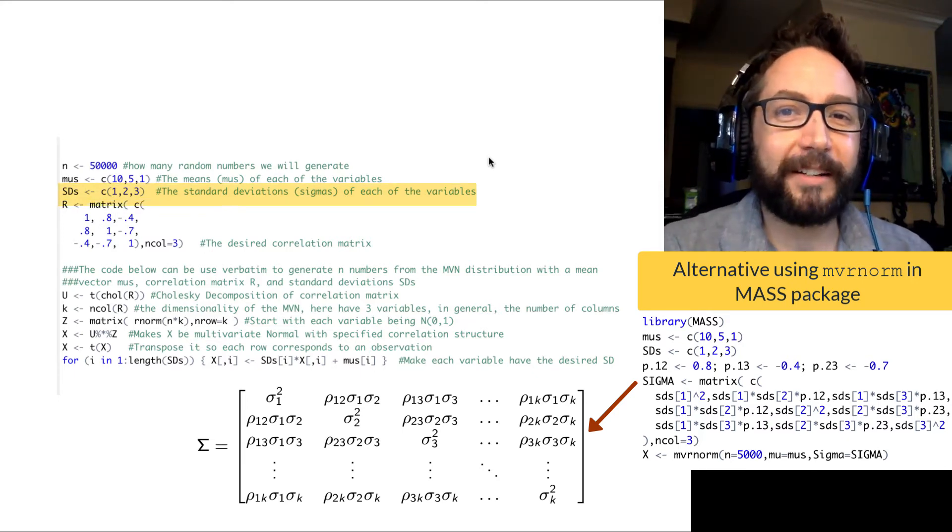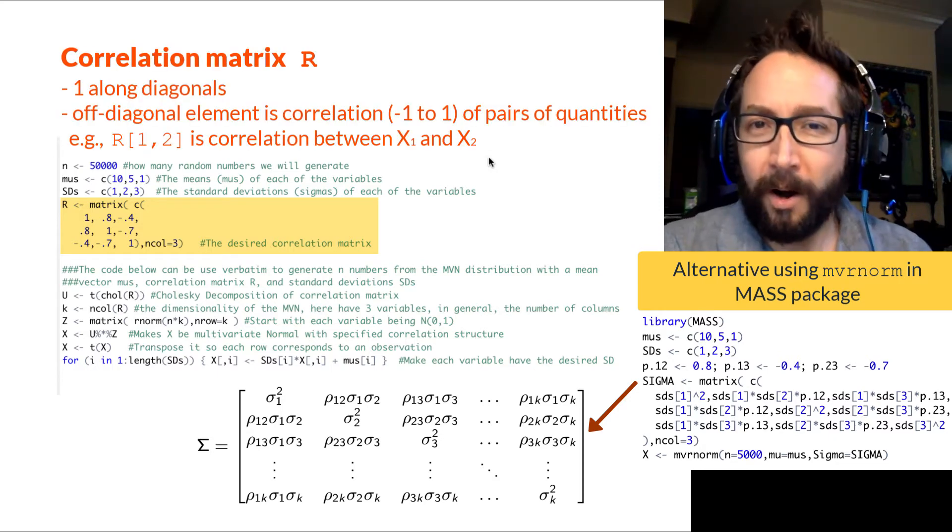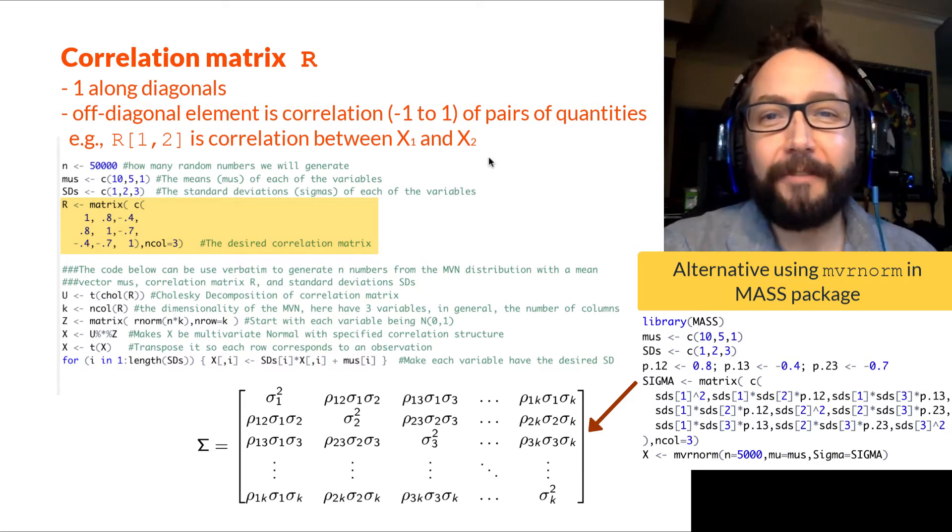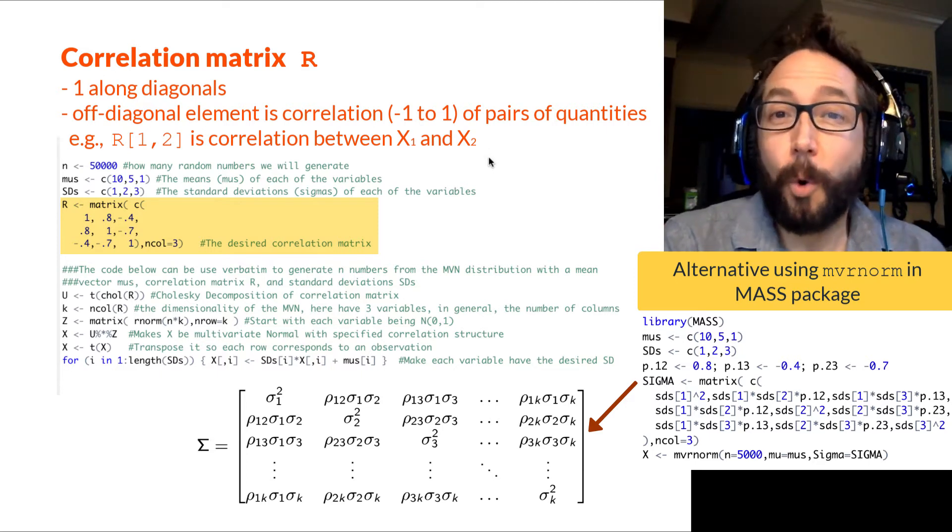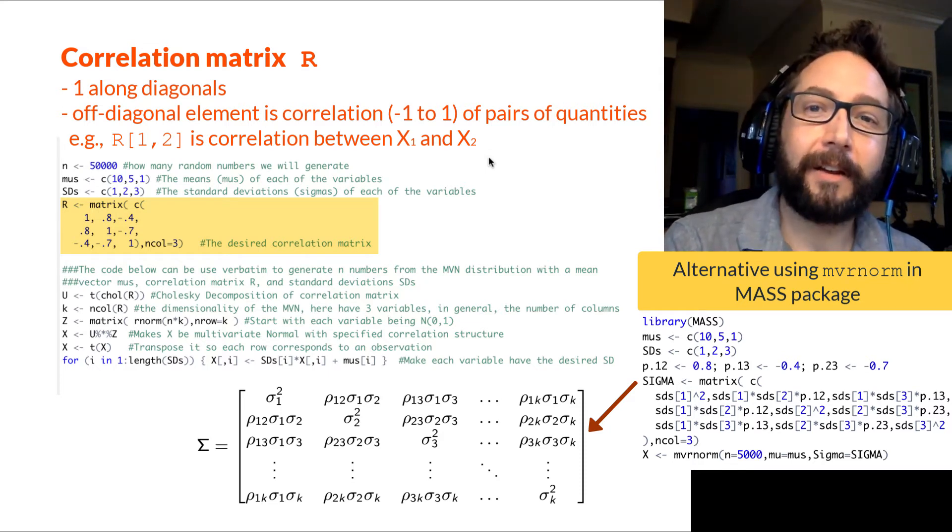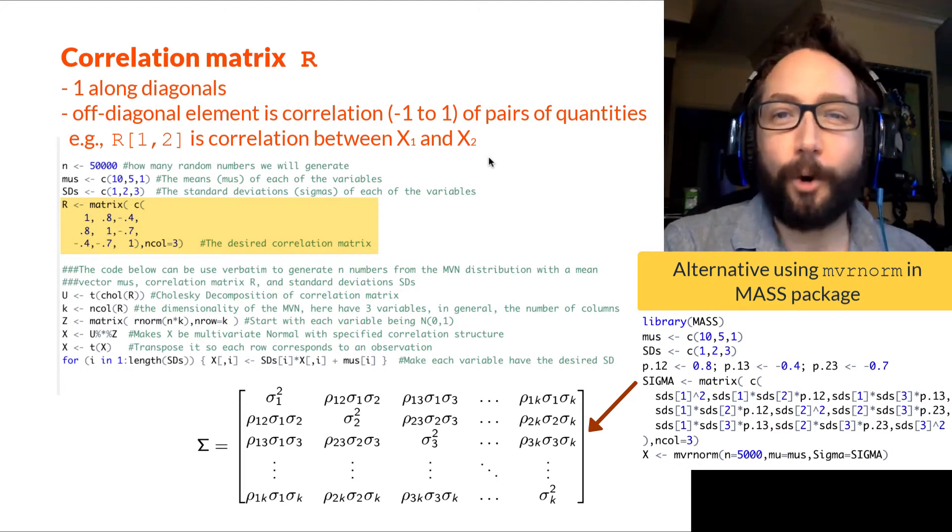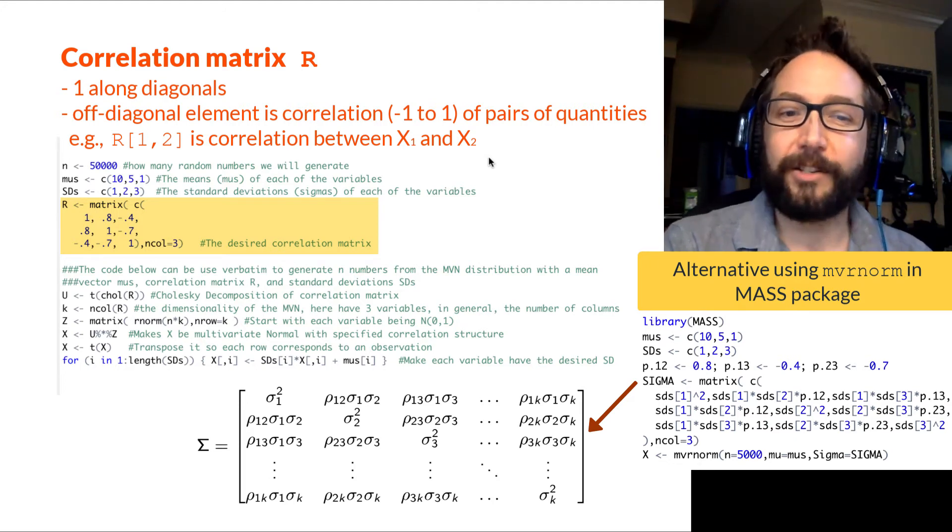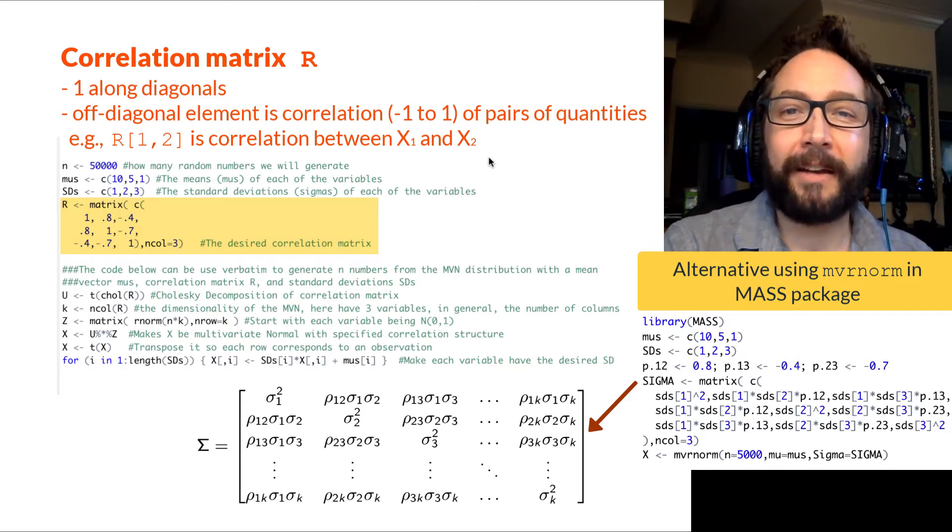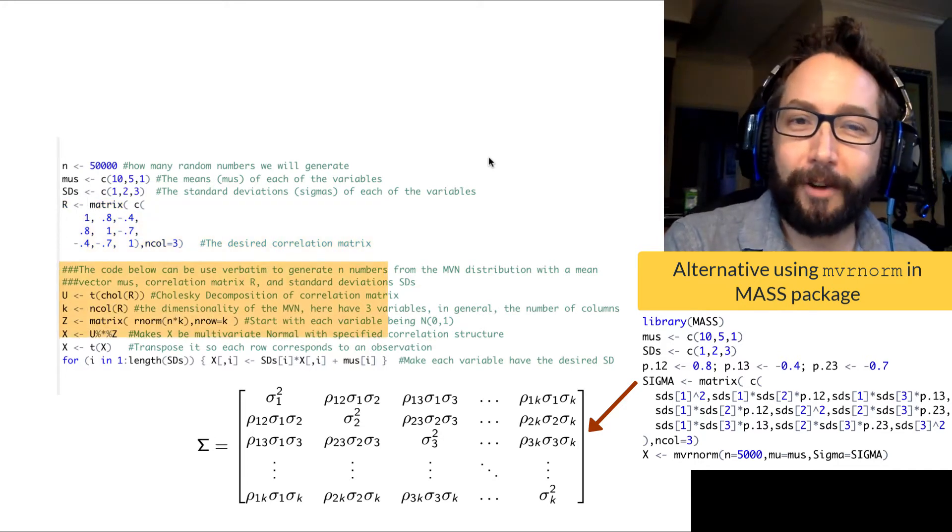And then what I'm going to do is I'm going to define a covariance matrix. But I'm going to do this so that ones are across the diagonal, so it's kind of a correlation matrix. And on the off diagonal elements, that's going to contain the correlations that I want my pairs of random quantities to have. So the entry in the first row and second column of the R matrix is going to be the correlation between x1 and x2. Now, once I've set that up, once I've set up n, mu's, sd's, and the correlation matrix, it just involves running the rest of the code, which does some fairly advanced matrix calculations.